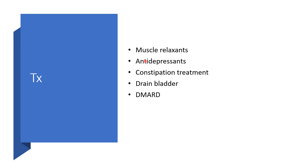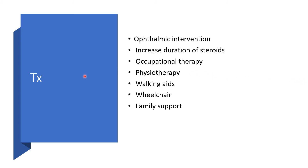Additional treatments include muscle relaxants for spasticity, antidepressants for neuropathic pain and depression, appropriate treatment of constipation, and bladder drainage as needed. Disease-modifying antirheumatic drugs may be used for autoimmune conditions. Ophthalmological intervention, extended steroid courses, occupational therapy, physiotherapy, walking aids, wheelchair provision, and family support should also be considered.